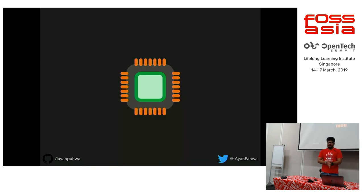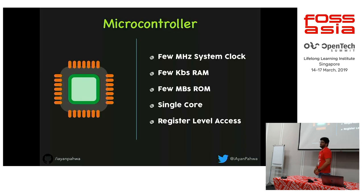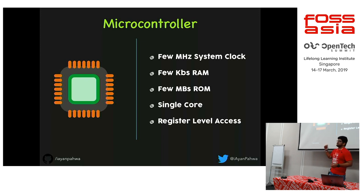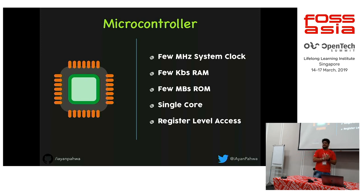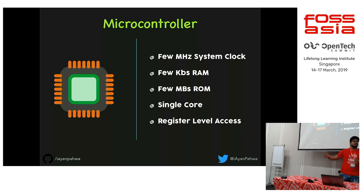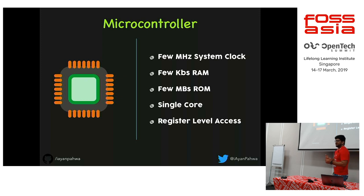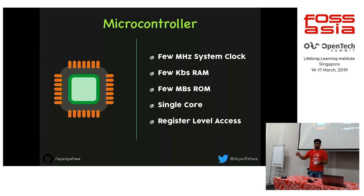Microcontrollers have limitations: they don't run at gigahertz clocks — maybe a few megahertz — with only a few kilobytes of RAM, megabits of ROM, and register-level access. Getting Python onto such a constrained device was a challenge. Before MicroPython, people used C, C++, or assembly, because you had to program directly to exposed registers — doing bit twiddling, right-shifting, left-shifting — just to configure pins as input or output.